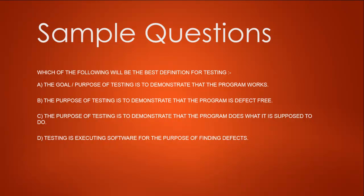So we have three options left. Let's check C: purpose of testing is to demonstrate that the program does what it is supposed to do. Well that is not true; our purpose of testing is to first find bugs. So let's see which are the two closer definitions remaining. Option A: goal of testing is to demonstrate the program works. And final option is to find the defects. So between A and D, we can go for finding the defects, which is option D.